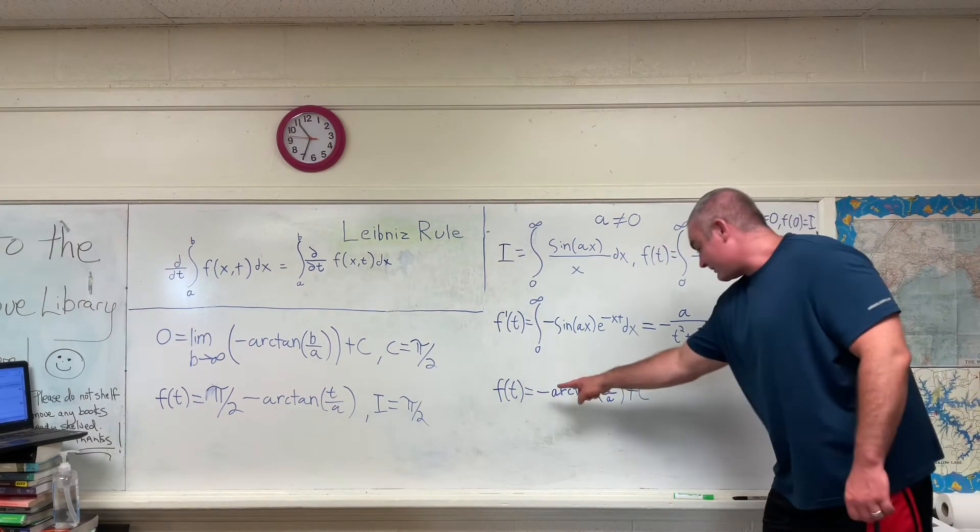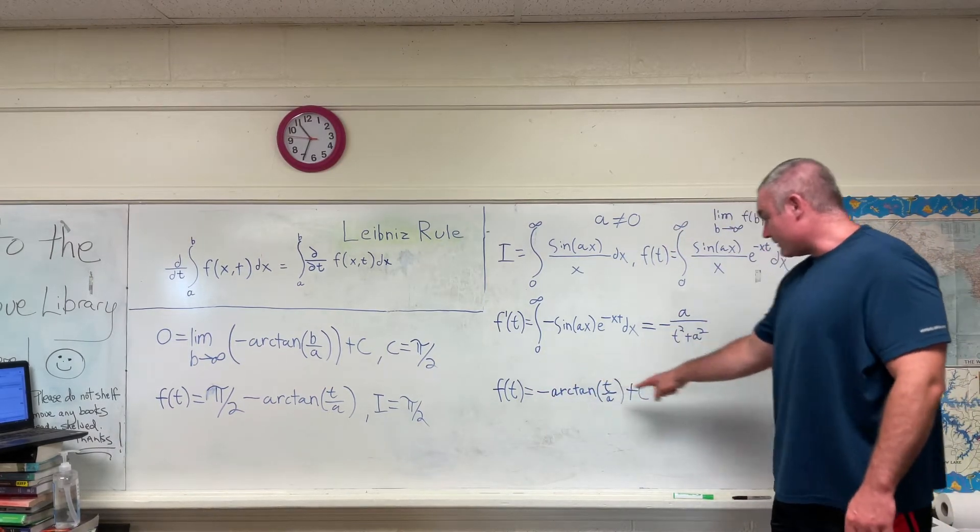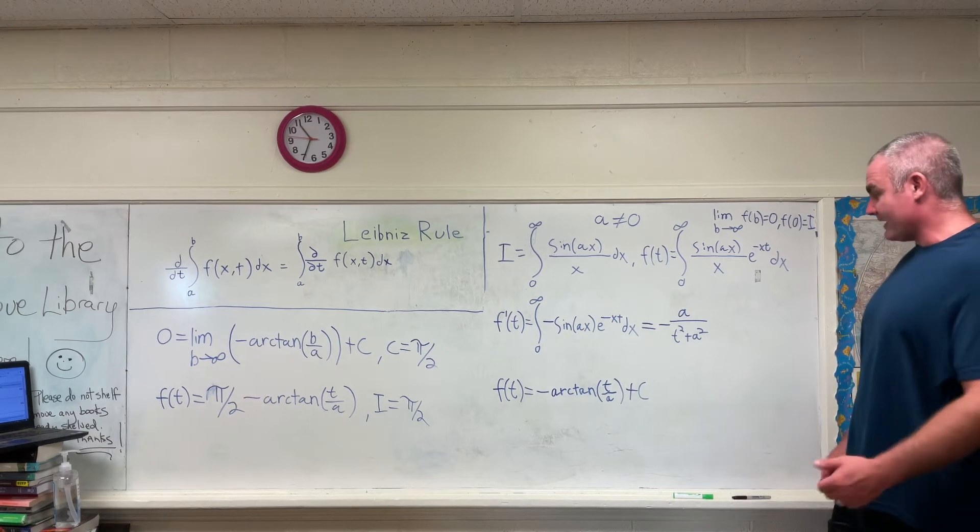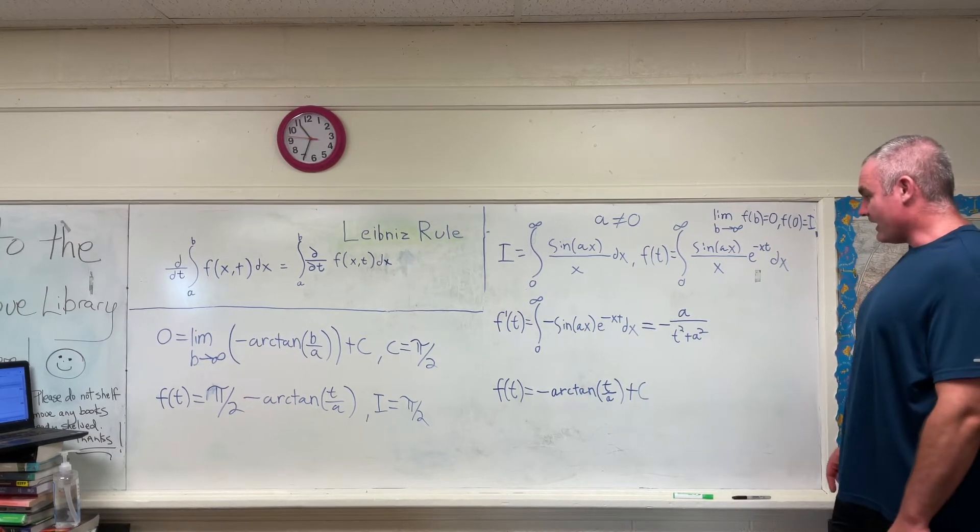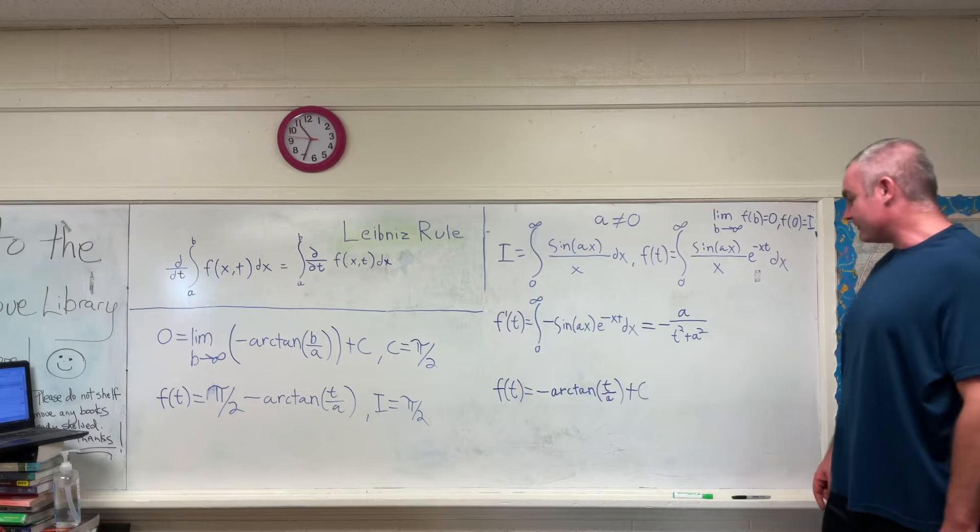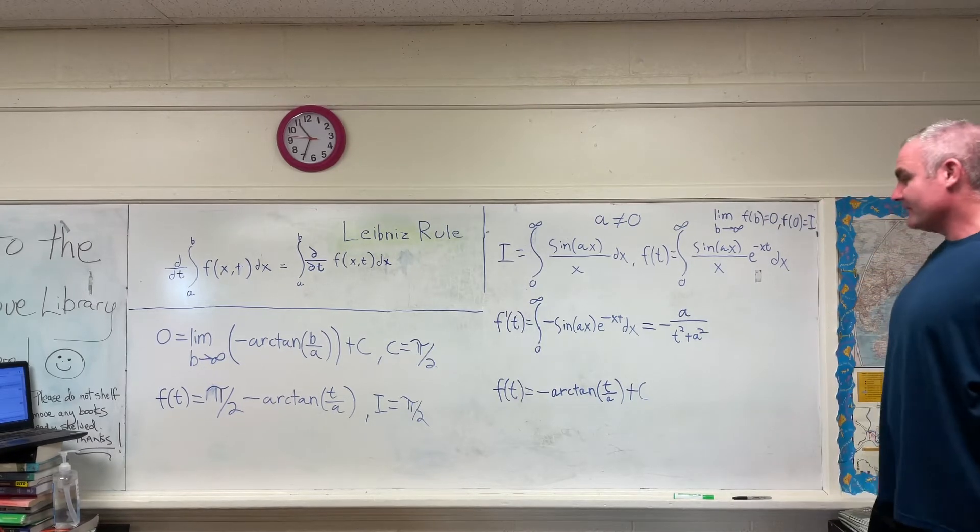If you integrate that, this is what you're going to get. Go ahead and do it yourselves if you want, but I promise that's correct. So we have f of t is equal to negative arc tangent of t over a plus c.